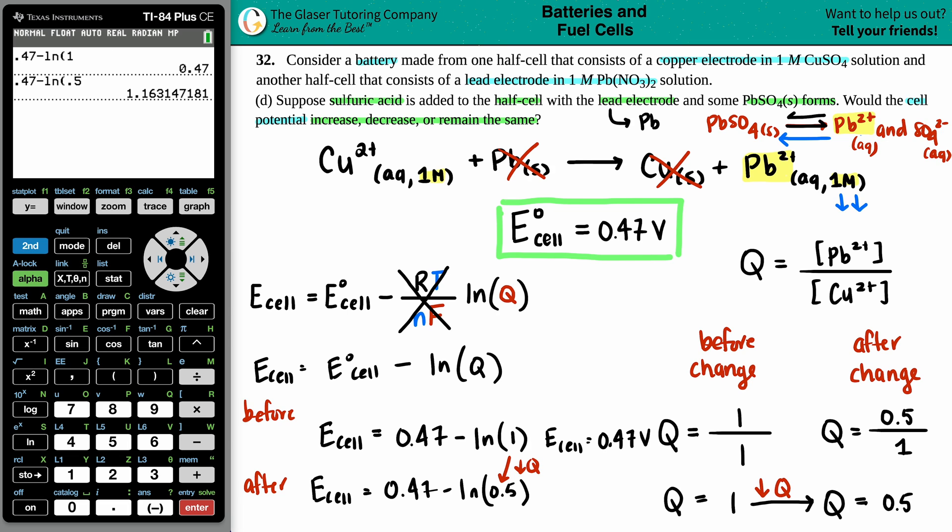Ah, and now the E_cell goes up. Now it's like 1.16 volts. And that is basically the answer to this problem. What happened from 0.47 to 1.16? The cell potential increased. And that is your final answer.